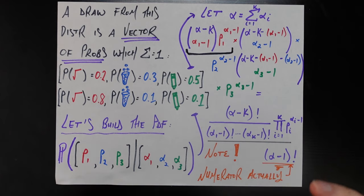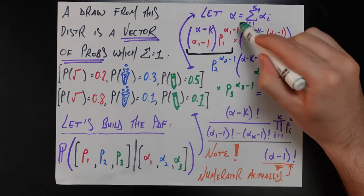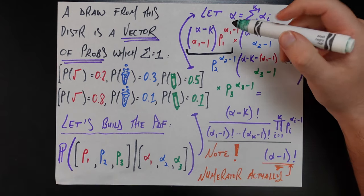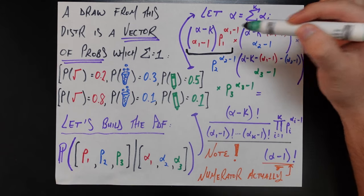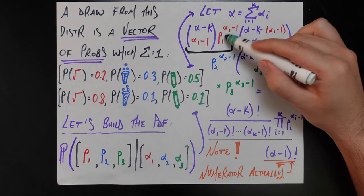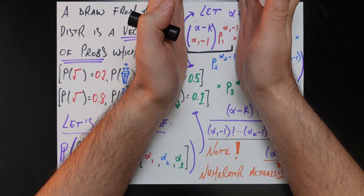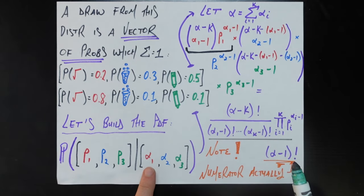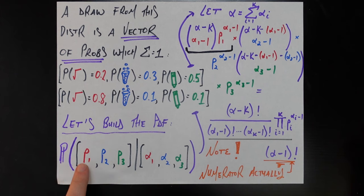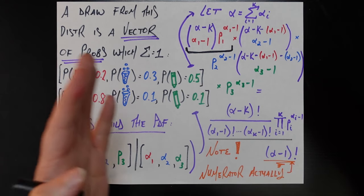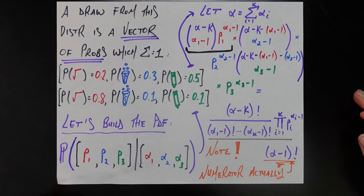So to recap: this first term tells us given alpha_1 minus one people majoring in math, how many ways can that happen from the total sample, and then enforces that this probability p1 applies to each of those people. This gives the total probability, across all ways it could happen, of having alpha_1 minus one people major in math if the probability I'm modeling is p1. The rest of these terms are literally doing the same thing but for people majoring in science, English, history, and so on.